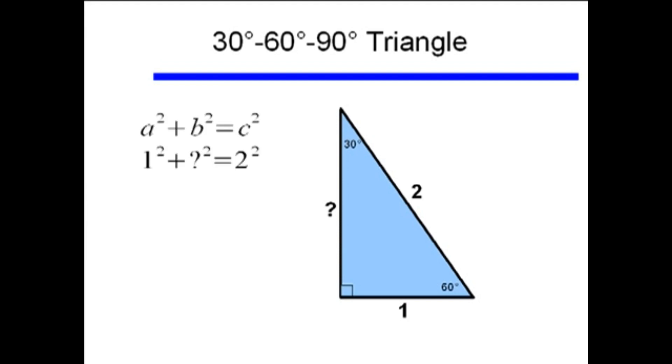So we'll still use Pythagorean's theorem, now that we have a right angle. 1 squared plus something squared is 2 squared, and like before we'll simplify this out, so that the length of that second leg squared is 3, or taking the square root of both sides, the length of that leg is square root of 3, or approximately 1.732.